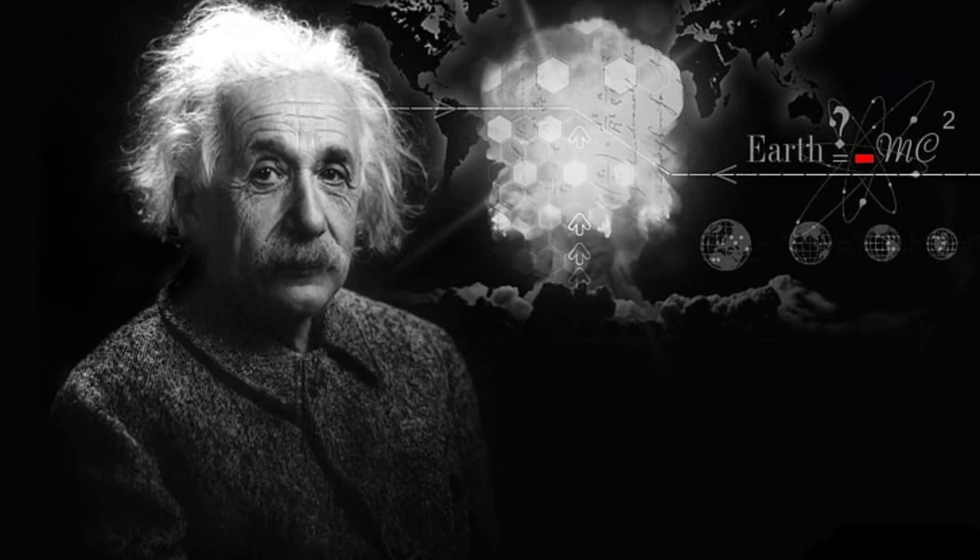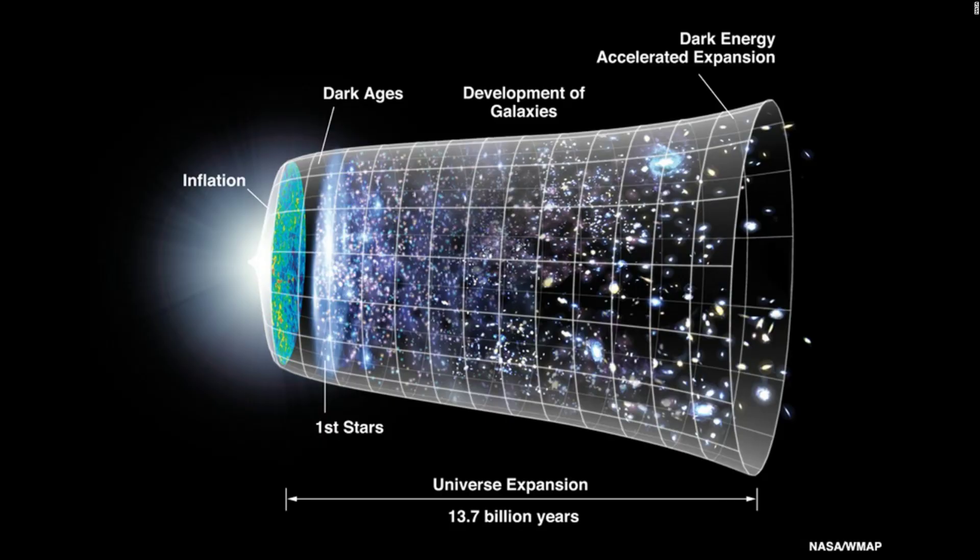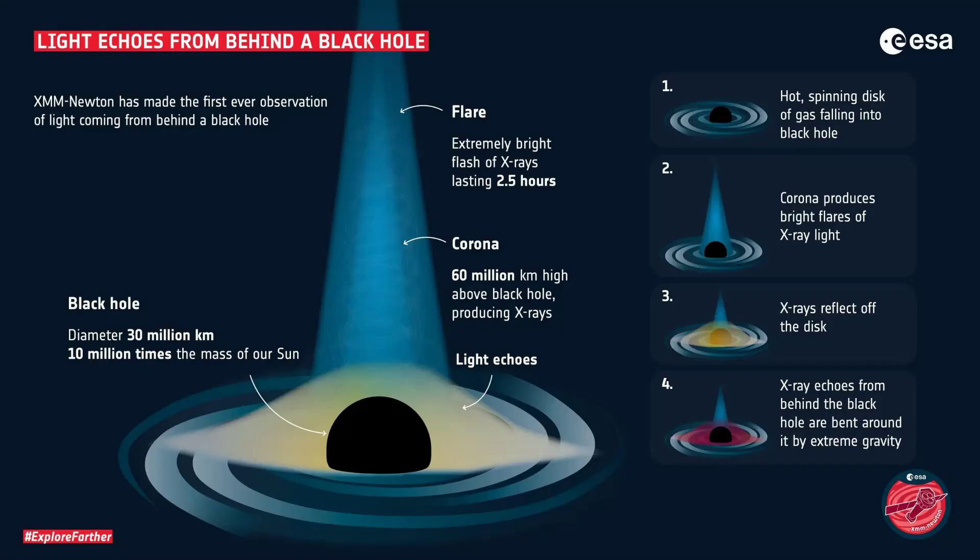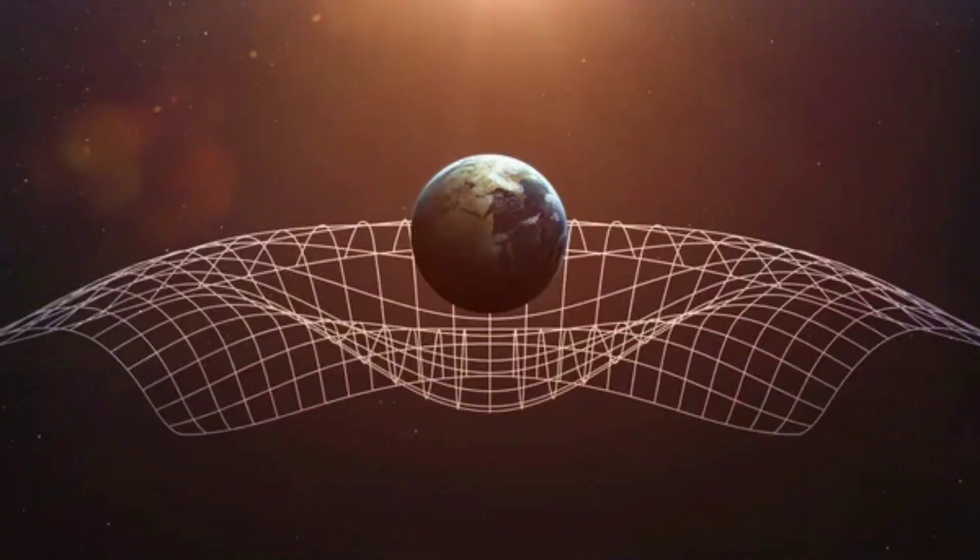One of the key concepts of the special theory of relativity is the idea that the laws of physics are the same for all observers in uniform motion relative to one another. This means that if two observers are moving at a constant speed relative to each other, they will see the same physical laws at work. This may seem obvious, but it was a major departure from the traditional Newtonian view of the universe, which assumed that there was an absolute space and time that were the same for all observers.